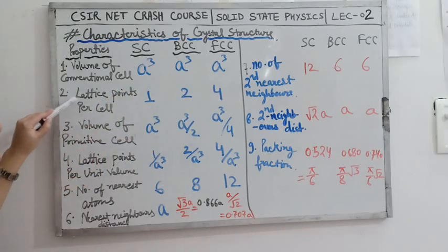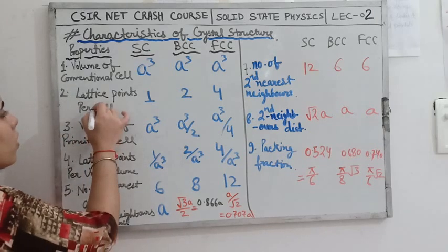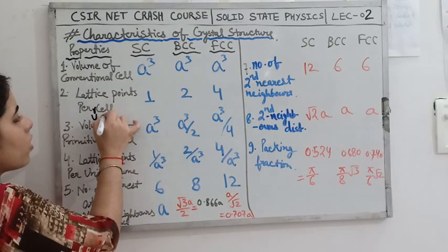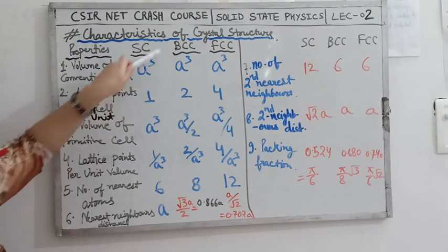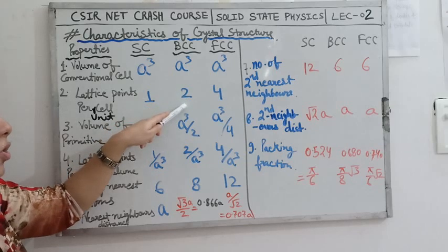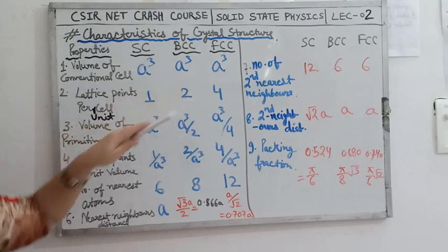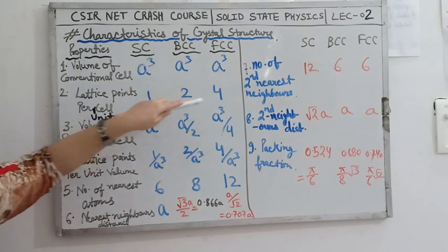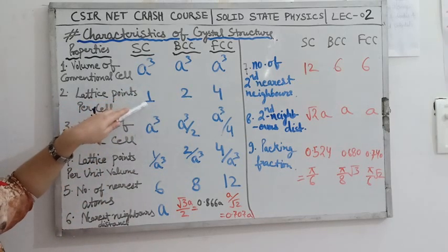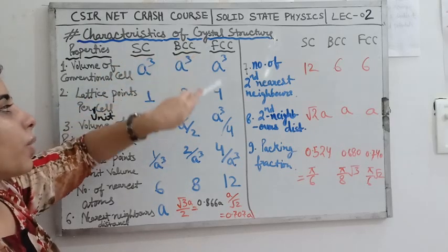The second property is lattice points per unit cell. For simple cubic structure it is equal to 1, for body centered cubic it is 2, and for face centered cubic it is 4. These are the effective lattice points per unit cell for all three crystal structures.